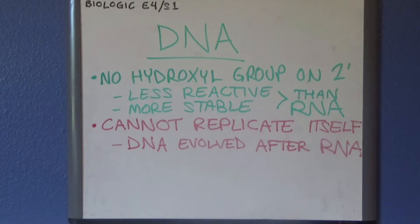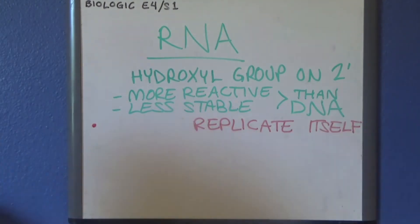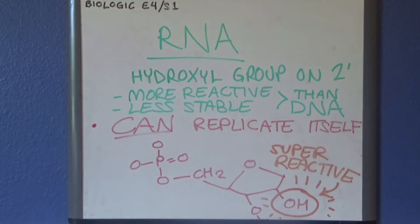However, on its own, DNA cannot replicate itself. DNA cannot catalyze any reactions. In order to replicate, DNA requires a whole suite of proteins to come and help it. Because of this, it's believed that DNA evolved after RNA. Because unlike DNA, RNA can actually catalyze the reactions in the protein suite that are necessary to replicate itself. What is it about RNA that gives it this ability? Where DNA lacks a hydroxyl group, RNA possesses one. This hydroxyl group on the end of RNA makes it much more reactive, and this reactivity allows RNA to participate in, for example, condensation reactions.